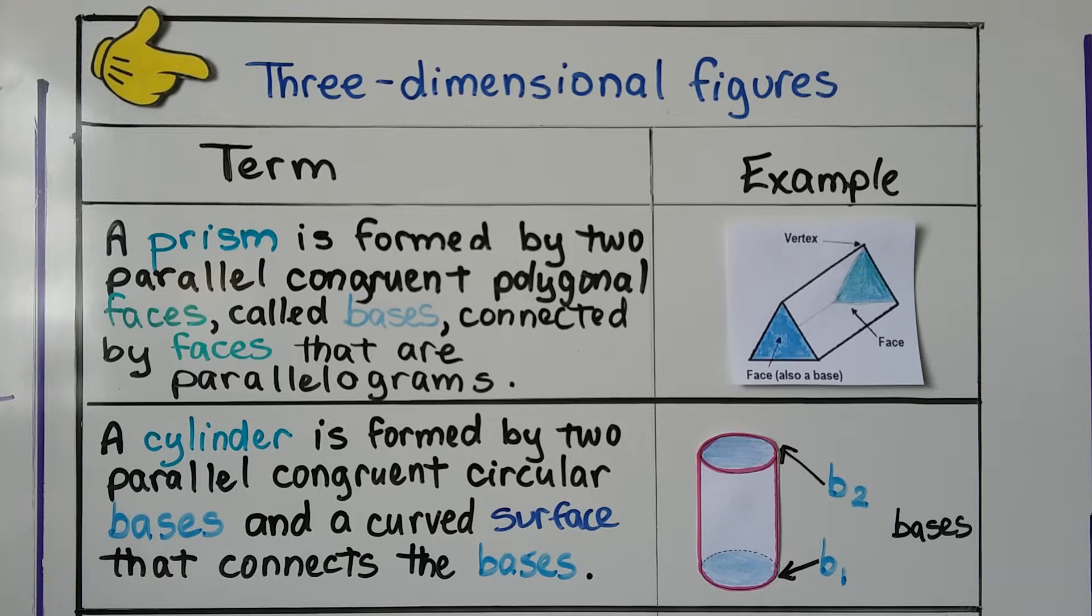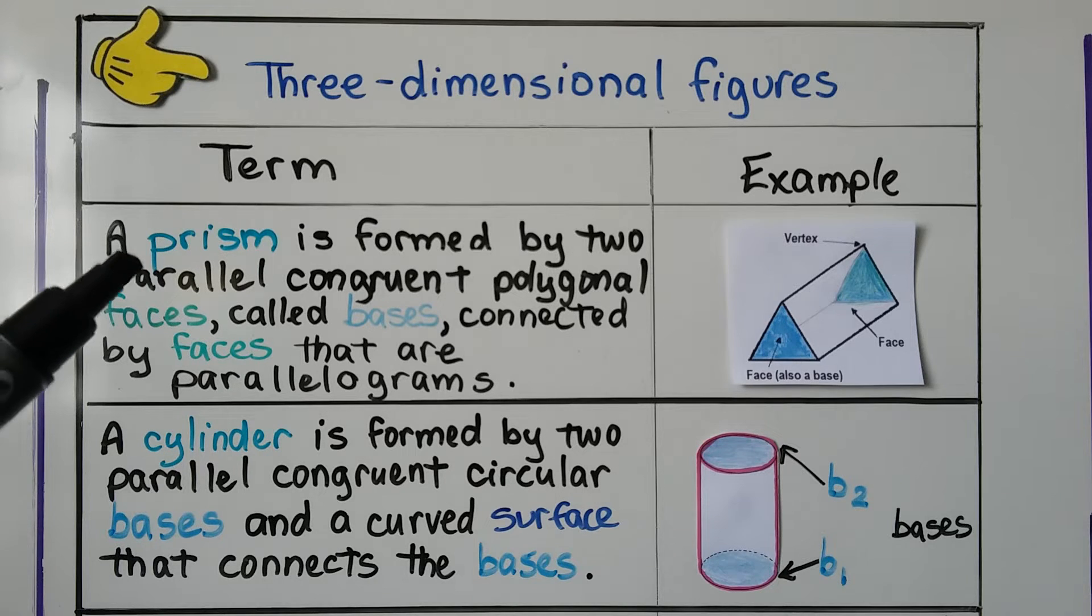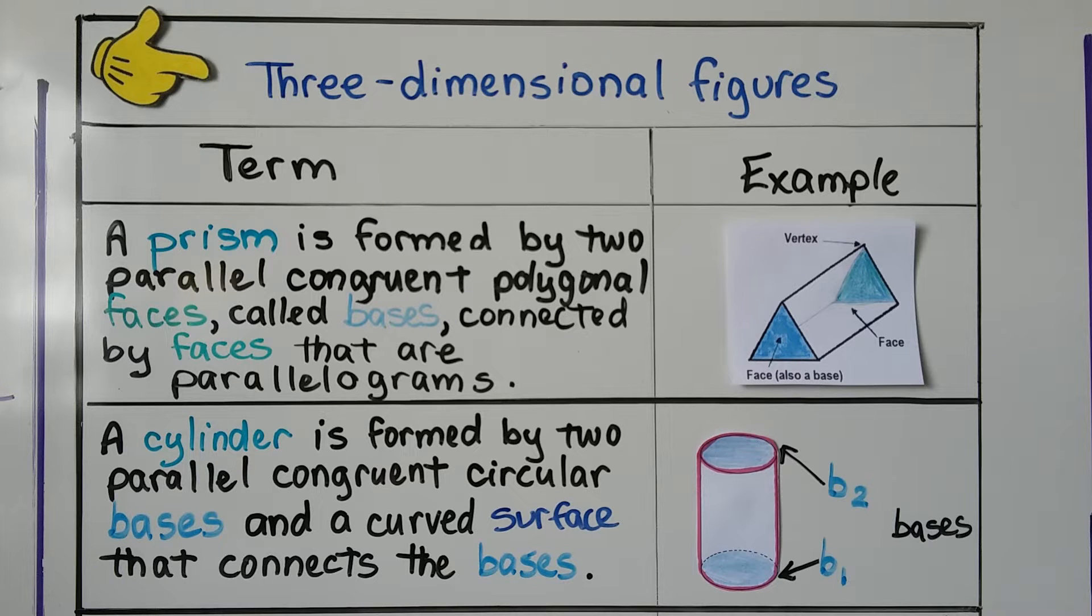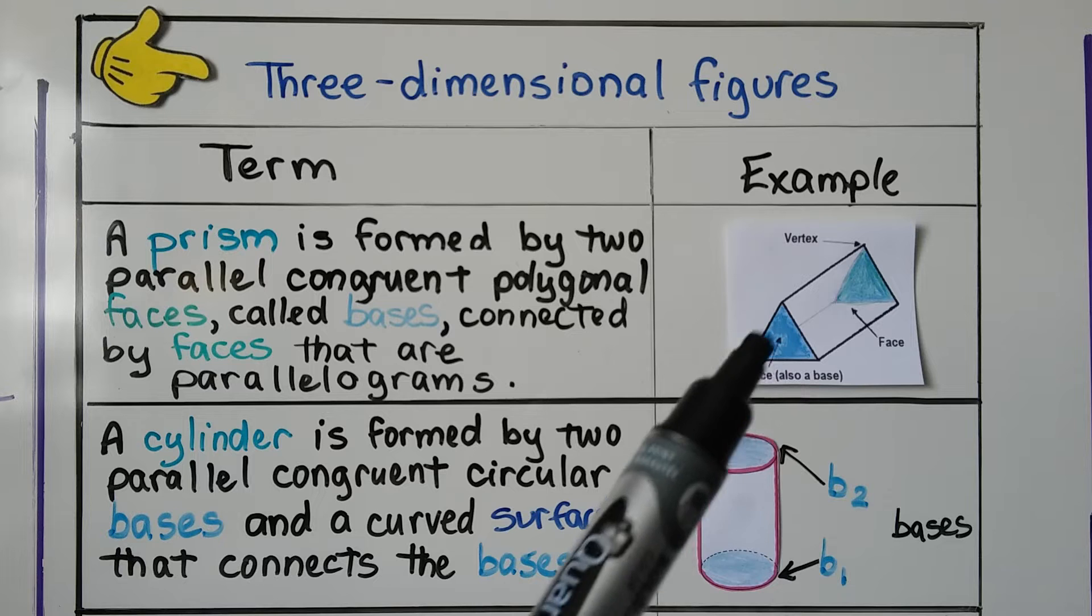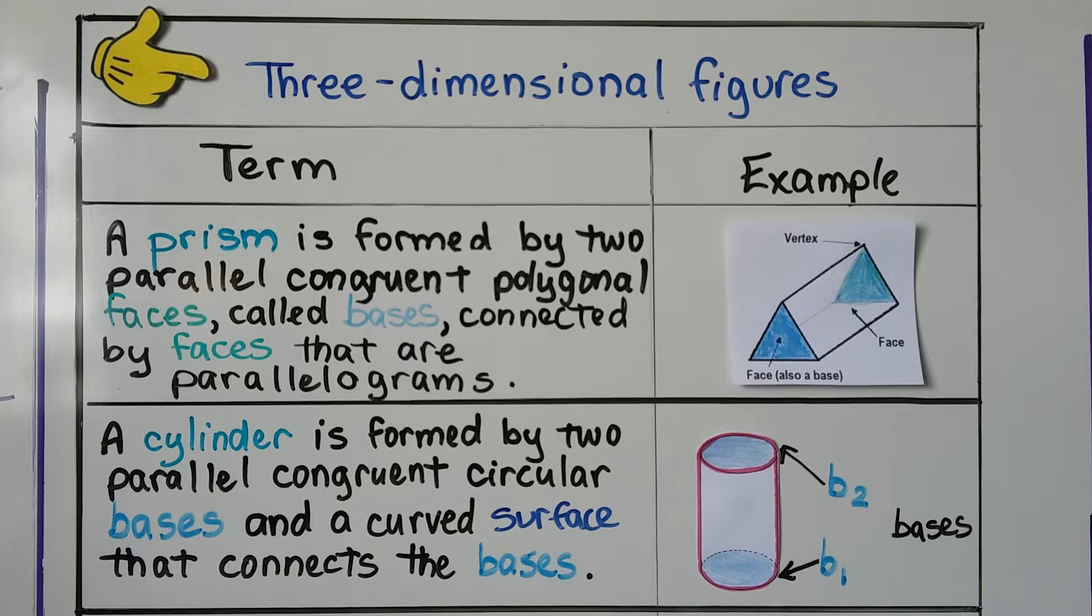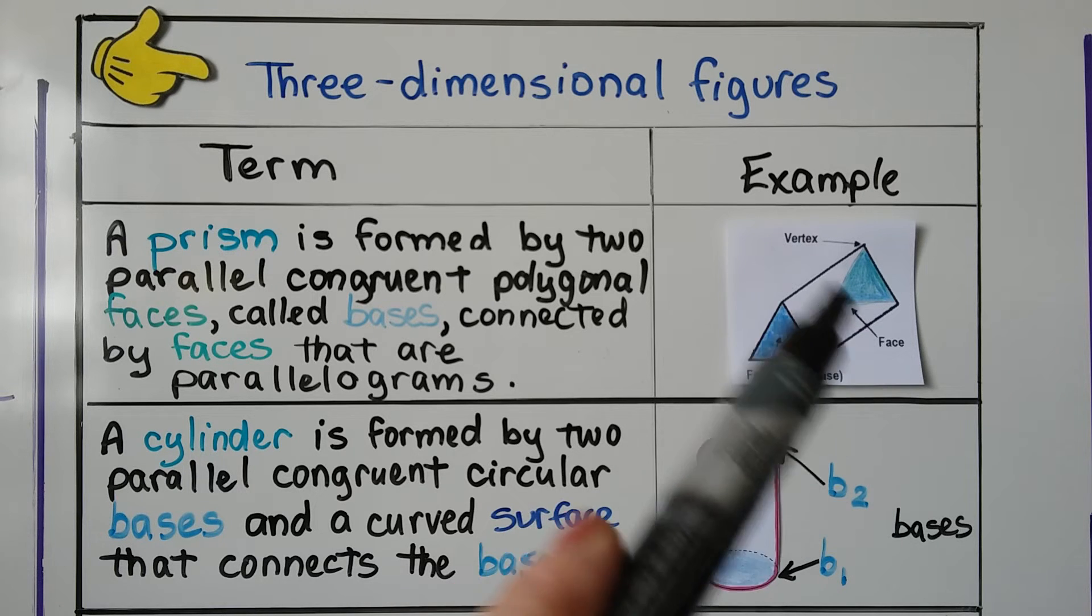I have four examples of three-dimensional figures for your notes. Our first term is prism, and it's formed by two parallel, congruent, polygonal faces called bases. So we have a triangle base here, and we have a triangle base back there, and they are considered faces. And they're connected by faces that are parallelograms.